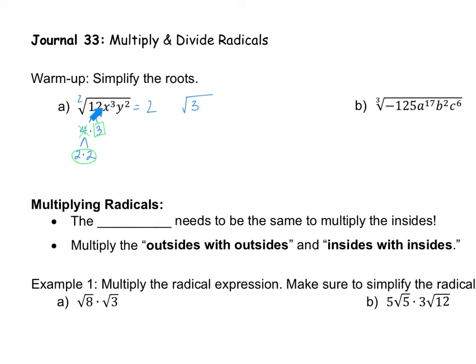Now for the variable x: whenever we're taking a root with an exponent, we divide. How many times does 2 go into 3? It only goes in once, so x to the first power comes out. But there's 1 left over since 3 minus 2 is 1, so there's still an x left inside the root.